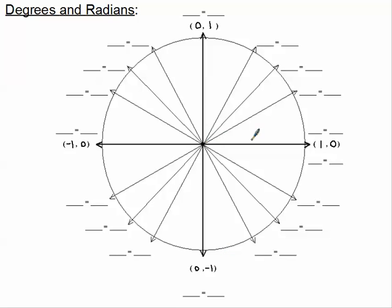We've got all of these angles in our unit circle. What I'd like to do first is label all of these angles in degrees, and that's going to go on the left side, the left blanks. And then we're going to come back and equate them to what they are in radians. You are going to need four colors: a regular pencil or black, a red, an orange, and a blue. Please pause and get those colors, whether they're colored pencils or crayons or markers. This color coding will definitely help you.